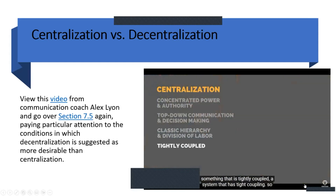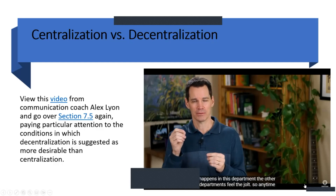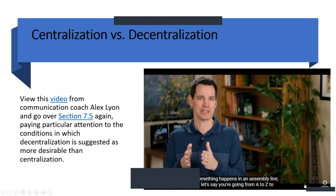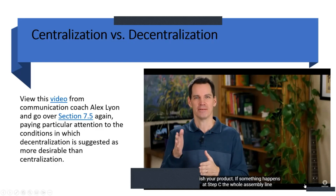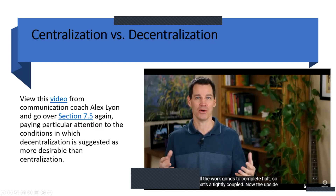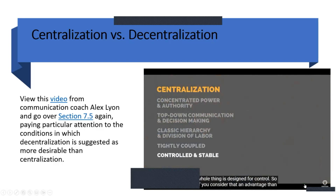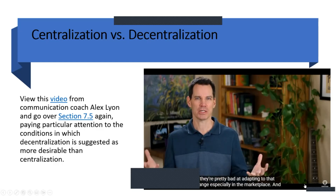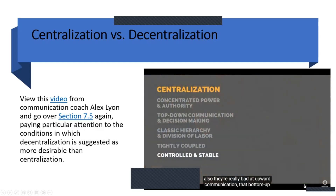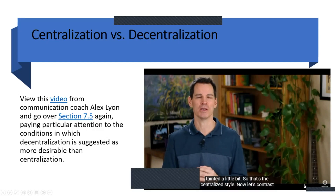What you end up with is a tightly coupled system — everything in the organization is directly connected, and if one thing happens in one department, the other departments feel the jolt. If something happens at step C in an assembly line going from A to Z, the whole line has to stop. The upside of centralization is control and stability — the whole thing is designed for control. The downside is that it's not very flexible or adaptable to change, and it's really bad at upward communication — good feedback from employees or customers doesn't make it to top-level decision makers through all those levels of hierarchy.